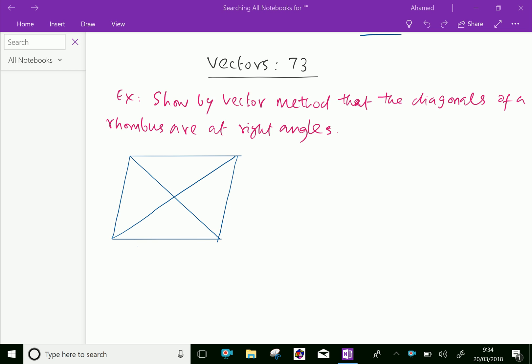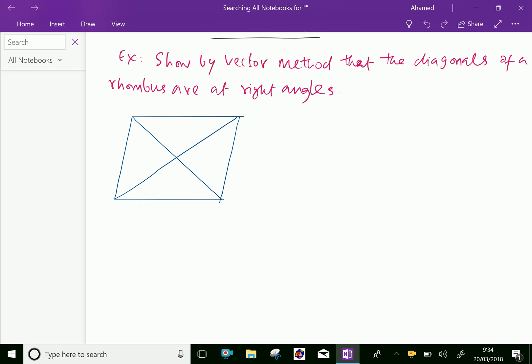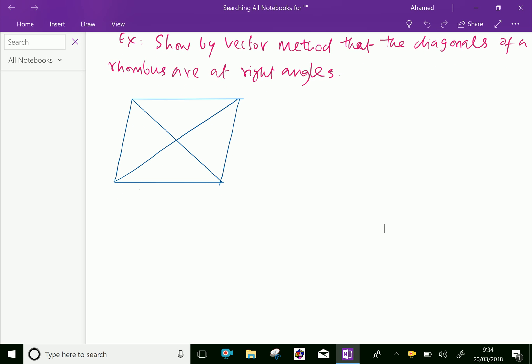Look at this figure. Remember, this figure indicates a rhombus A, B, C, D. The diagonals are AC and BD intersecting at right angles. We have to prove this.